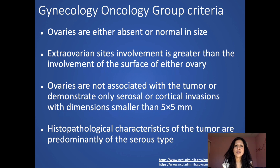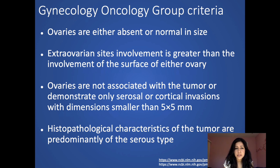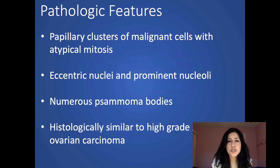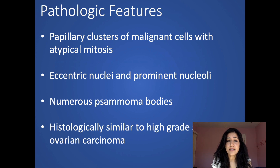The gynecology oncology group criteria to diagnose primary peritoneal serous carcinoma: first, the ovaries must be either absent or normal in size, and the extraovarian site involvement is greater than the involvement of the surface of either ovary. Ovaries are not associated with the tumor or demonstrate only serosal or cortical invasion with dimensions smaller than 5x5 mm. Histopathological characteristics are predominantly of the serous type, and it is histologically similar to high-grade serous ovarian carcinoma.